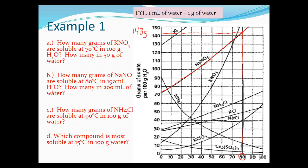Now the second part asks how many grams dissolve in 200 milliliters. Since the graph gives 143 grams per 100 grams of water and we've doubled the water amount, we double 143 to get 286 grams of NaNO₃ dissolving in 200 milliliters of water. Remember, milliliters and grams for water are equivalent — 1 milliliter of water equals 1 gram.